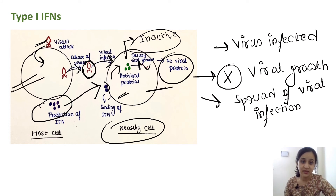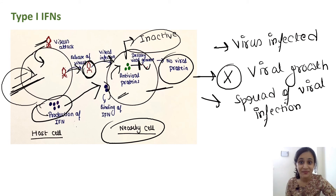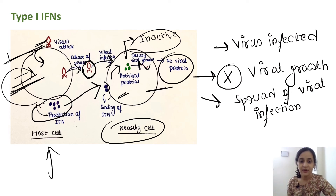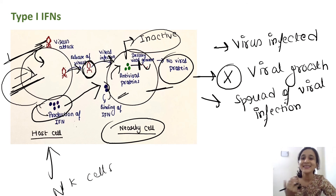But the host cells that actually secrete interferons will not be protected by those interferons. You need to remember that the host cells generating the interferons will not be protected — the interferons will not act on their own mother cell; they only protect nearby cells. Instead, these infected host cells will be identified and killed by natural killer cells. We will discuss natural killer cells and how they kill these cells in the next lecture, so don't miss it.